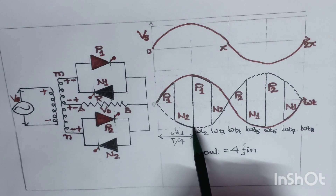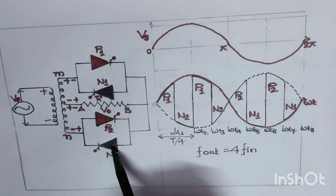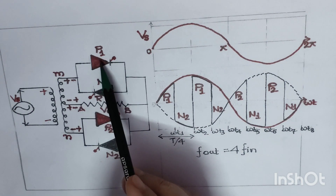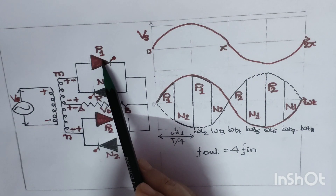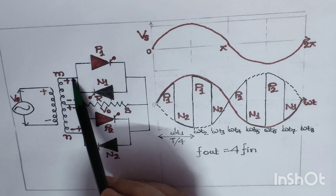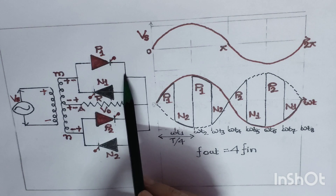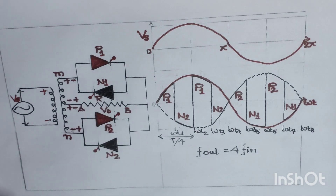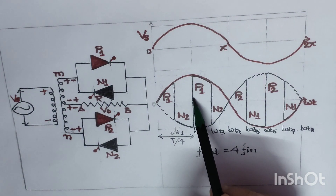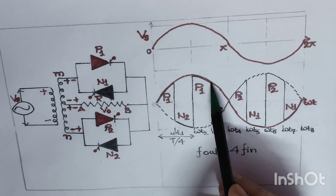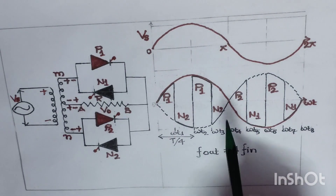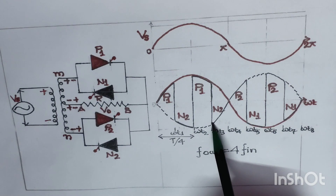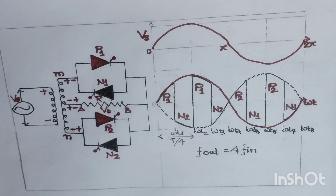At angle ωt2, we switch off thyristor N2 by force commutation and again apply a positive trigger pulse to thyristor P1. Current flows from the positive terminal through thyristor P1, comes here, and goes towards point B; current flows from B to A through resistance R back to the negative. At ωt2, positive output voltage polarity is restored and this cycle is completed. At ωt3, we switch off thyristor P1 by force commutation.